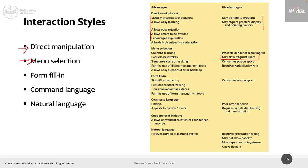One disadvantage of menu selection is that it may slow down frequent users — if you frequently use a command, you always have to open the menu, scroll the list, and navigate sub-menus. The solution is shortcuts: instead of going to Edit every time, you press Ctrl+C or Ctrl+V. Menu selection also consumes screen space and nesting can make information hard to find.